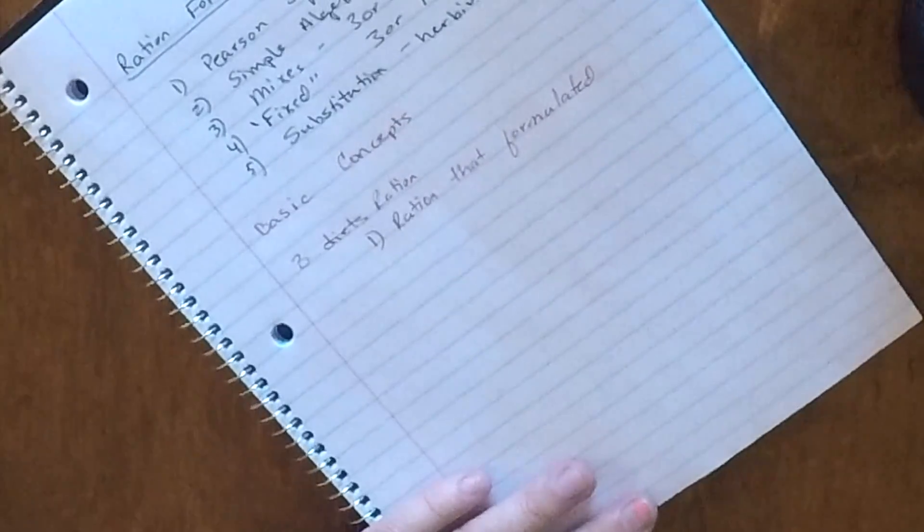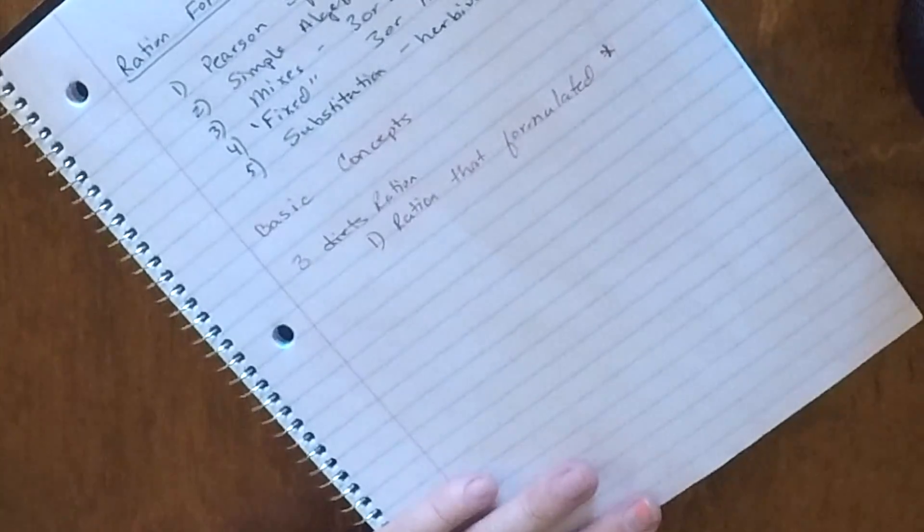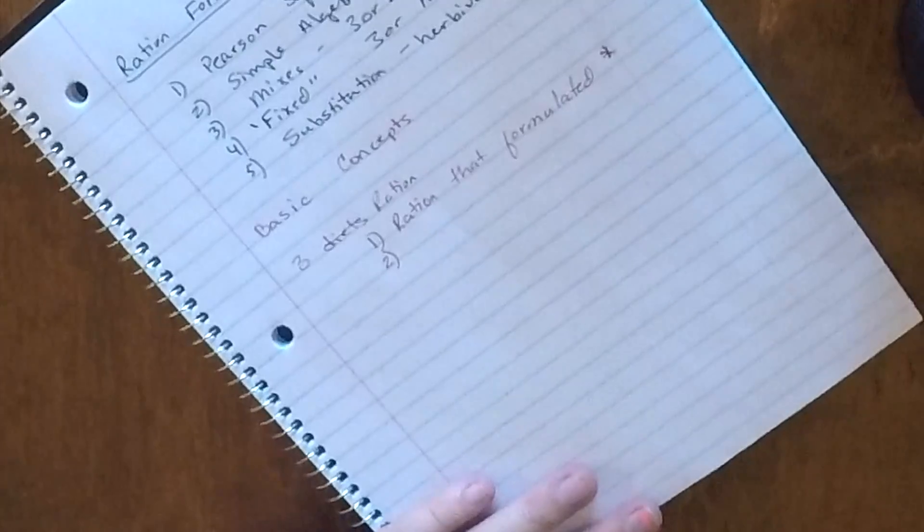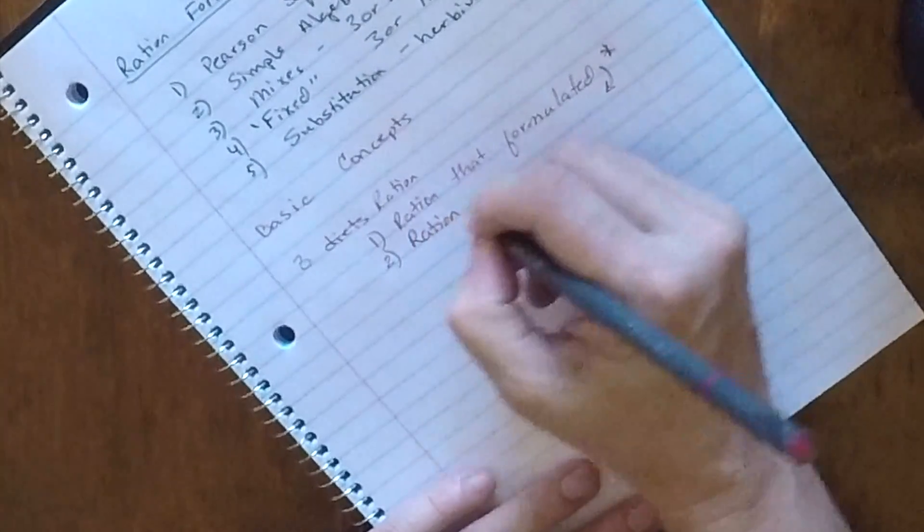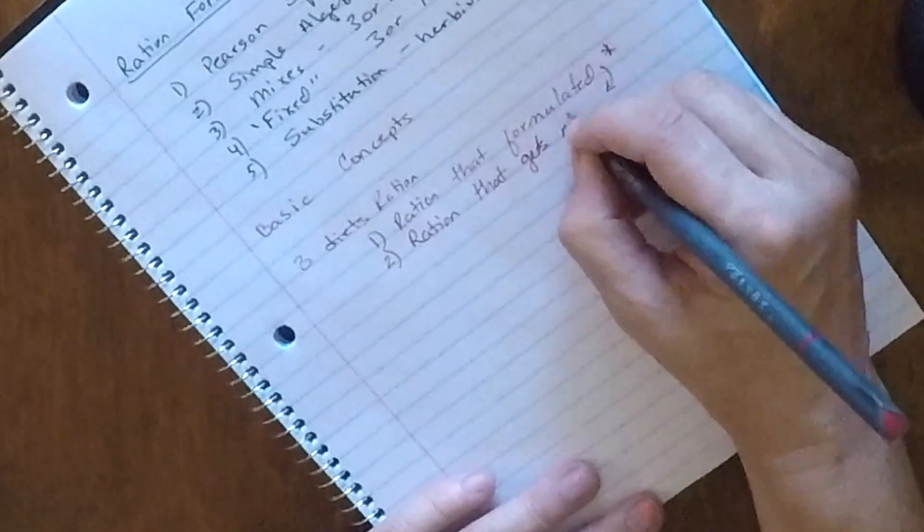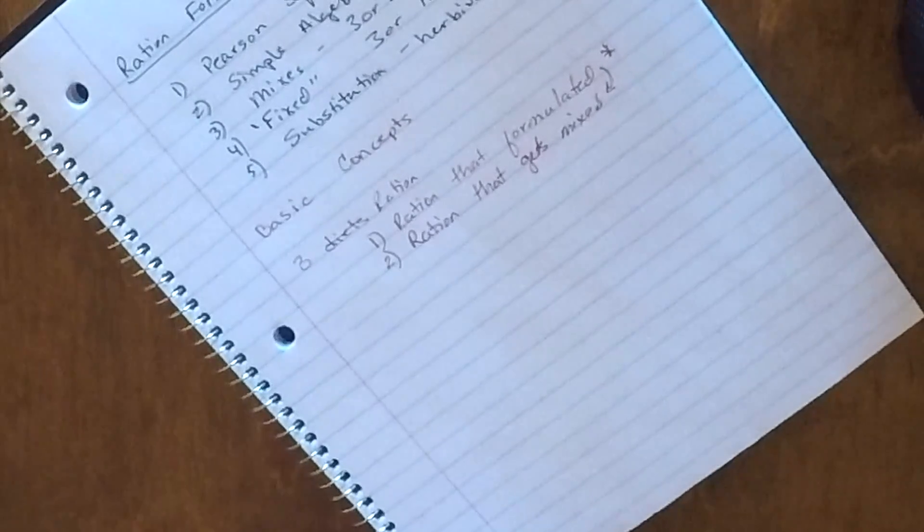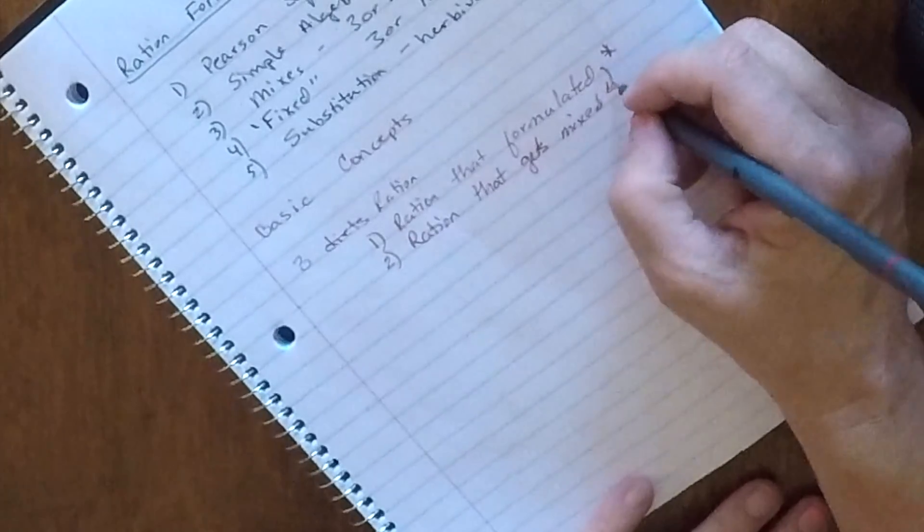The second type ration is once the producer takes this ration that's formulated, then we're going to move into the ration that actually gets mixed. Now, in a perfect world, it would get mixed according exactly how we calculated it. It would be perfect. However, if you've ever mixed feed in any way, stuff gets mixed up. So if you're running a front-end loader and trying to drop 1,500 pounds of a silage into the feed mixer, sometimes it's 1,400, sometimes it's 1,750, sometimes it's anywhere in between. So it doesn't always translate exactly from what's formulated to what's mixed.